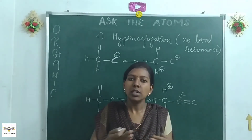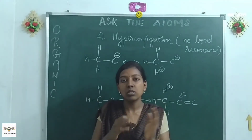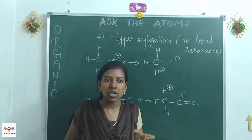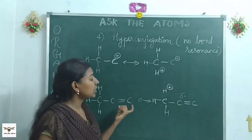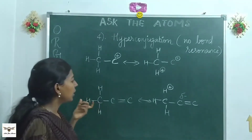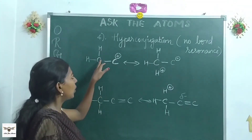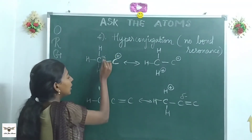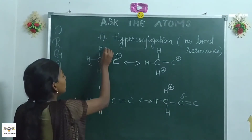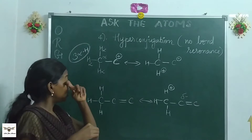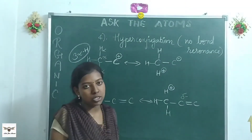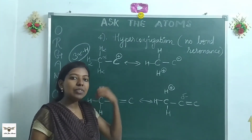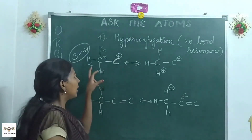Hyperconjugation is similar to the resonance effect — you can learn both together. The difference is that in resonance you see pi bonds initiating the delocalization, but in hyperconjugation you have sigma bonds involved. It is also called no-bond resonance. Hyperconjugation is a very helpful effect: it helps stabilize carbocations and alkenes. Here I have a carbocation attached to another carbon that has three hydrogens attached — I call this the alpha carbon and these the alpha hydrogens.